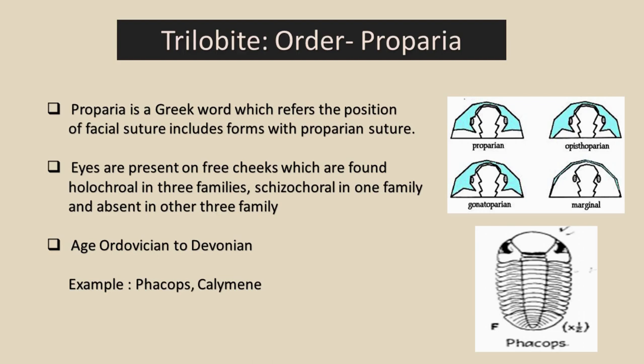Before we go further, we must know what a facial suture is and visualize the proparian suture. A facial suture lies on the cephalon, along which the parts of the cephalon separate when the trilobite molts. To visualize the proparian suture, look at this figure — we can see that the facial suture is bent towards the anterior margin before it reaches the genal angle. Now let's discuss the eyes of Order Proparia.